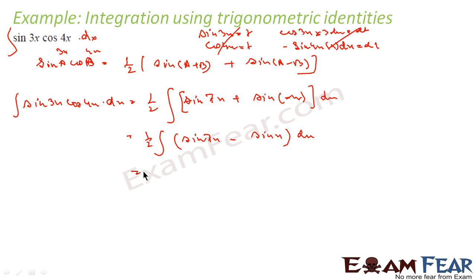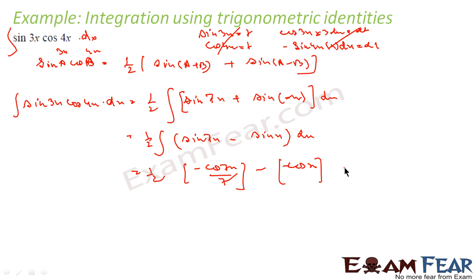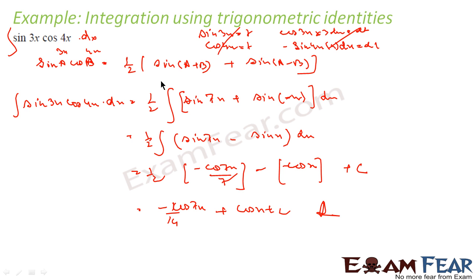We put a equal to 3x and b equal to 4x. So the integral of sin 3x cos 4x dx is nothing but 1 by 2 times integral of sin(3x plus 4x) plus sin(3x minus 4x) dx, which is 1 by 2 times integral of sin 7x plus sin(minus x) dx. Sin of minus x becomes minus sin x, so this is 1 by 2 times integral of sin 7x minus sin x dx. Solving: sin 7x integrates to minus cos 7x by 7, and sin x integrates to minus cos x, giving minus 1 by 14 cos 7x plus 1 by 2 cos x plus constant.